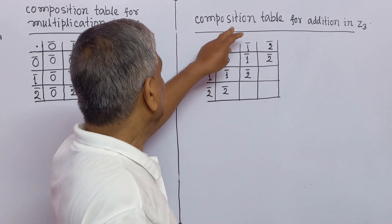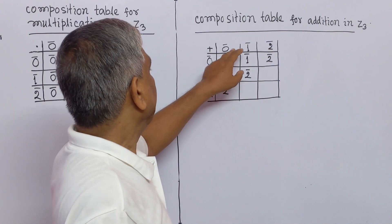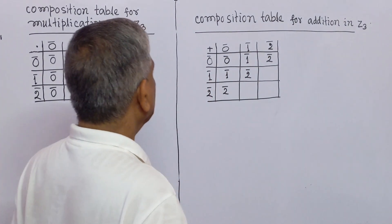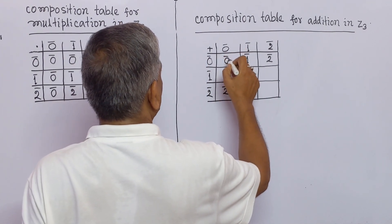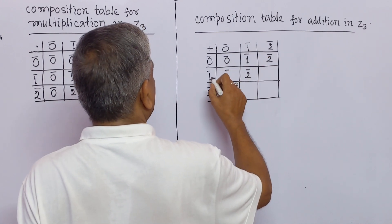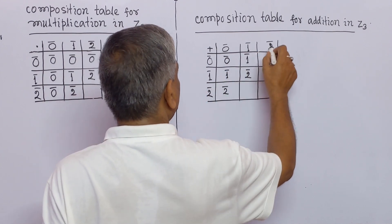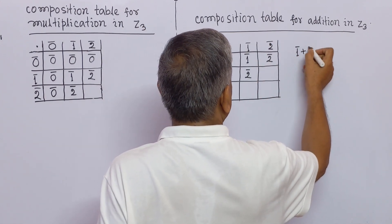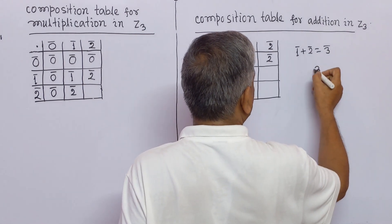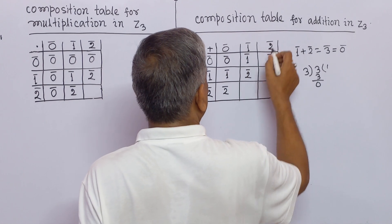Now we shall describe the composition table for addition in Z₃. The members of Z₃ are 0̄, 1̄, 2̄. We compute: 0̄ + 0̄ = 0̄, 0̄ + 1̄ = 1̄, 0̄ + 2̄ = 2̄. For 1̄ + 2̄: that equals 3̄, but 3̄ is not a member of Z₃. When 3 is divided by 3, we get remainder 0, so 3̄ = 0̄. Therefore 1̄ + 2̄ = 0̄.